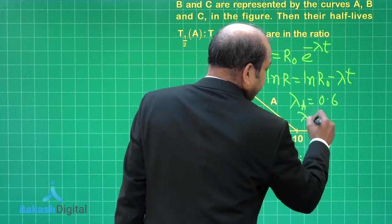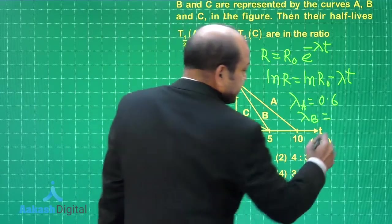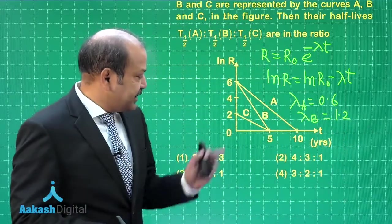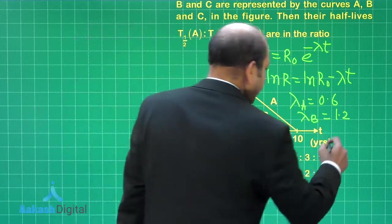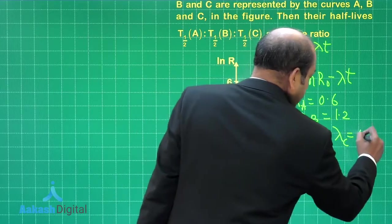Similarly for lambda B, we have lambda B is equal to 6 by 5, that means 1.2. And finally the value of lambda C is coming out as 2 by 5 or 0.4. So lambda C is 2 by 5 or 0.4.